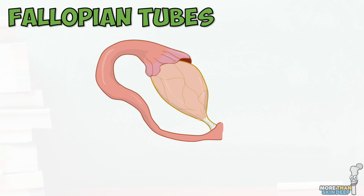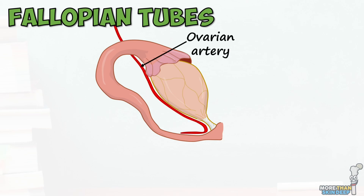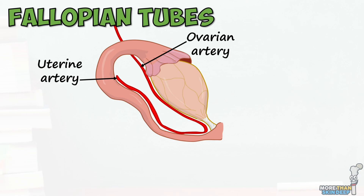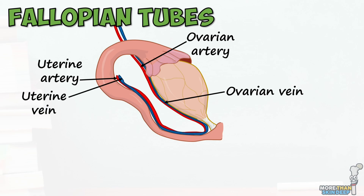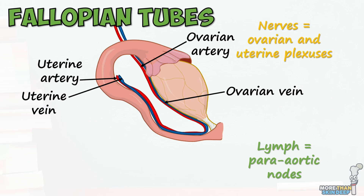Blood supply to the lateral part of the fallopian tubes is via the ovarian artery, and blood supply to the medial part is via the uterine artery, which itself comes from the internal iliac artery. Similarly, venous drainage is into the ovarian veins laterally and the uterine veins medially, and lymphatic drainage is again mostly into para-aortic nodes. Nervous supply comes via the ovarian and uterine plexuses, and sensation is referred to the T11, T12, and L1 levels.